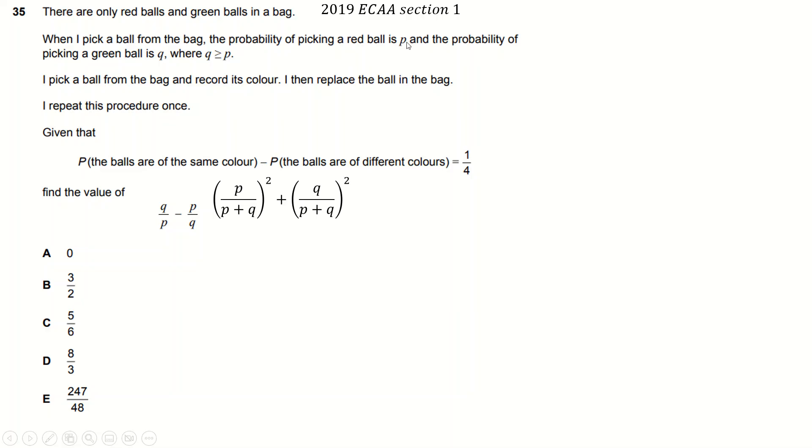Probability that they're different colors. Well, that's just going to be p over p plus q, if you take a red first, times q over p plus q to then take a green or the other way around. So you take away both of those cases. And that equals one quarter. But don't expand things out if you can't, if you don't have to. This makes p squared over p plus q all squared plus q squared over p plus q all squared. That's the same denominator. So you can just make this p squared plus q squared.